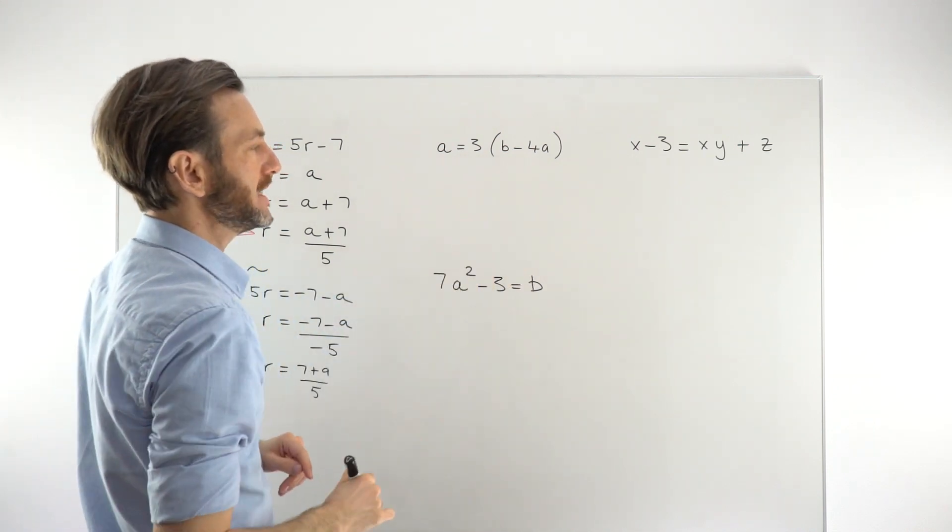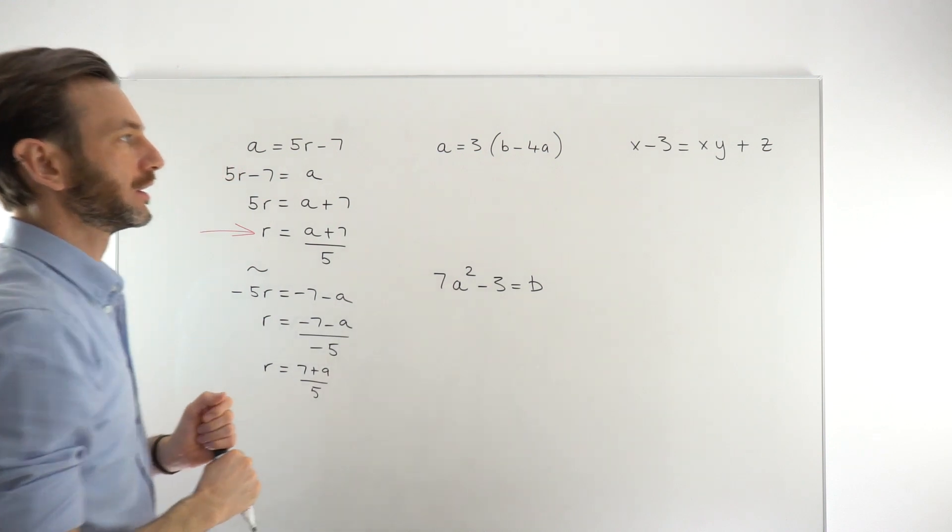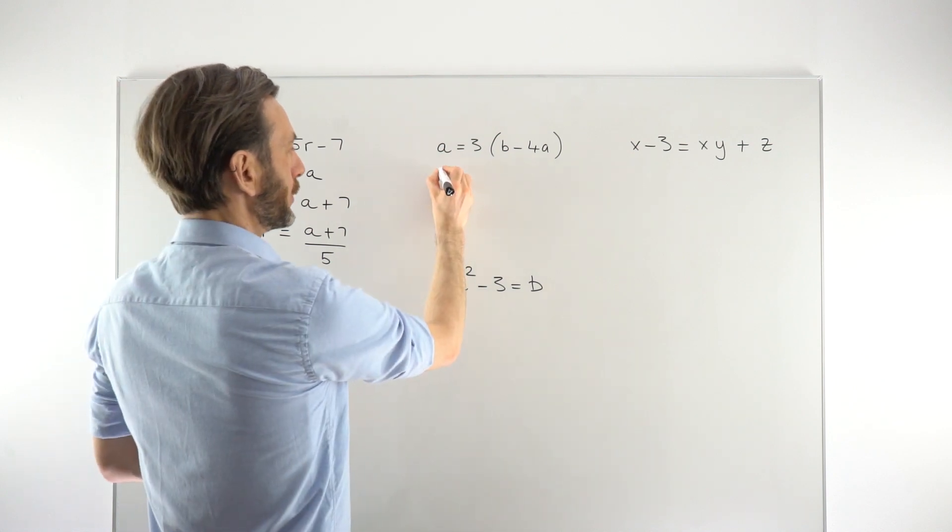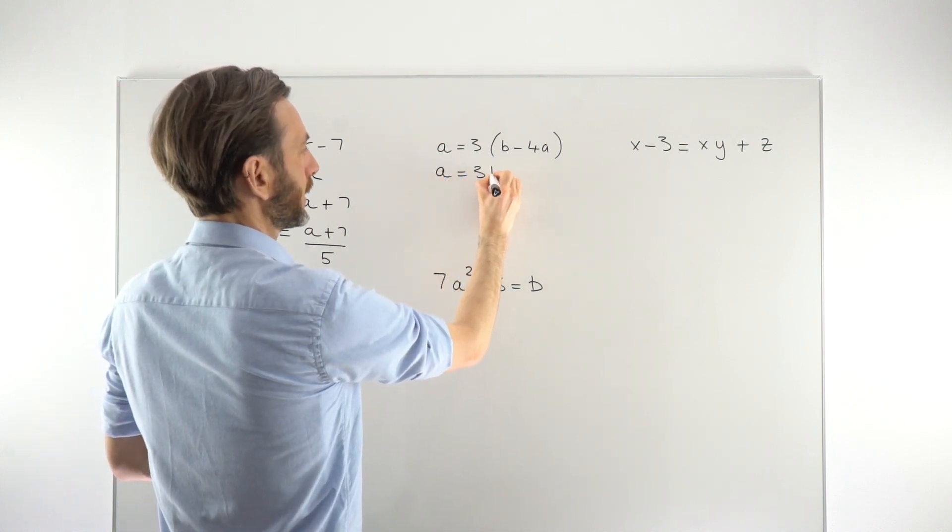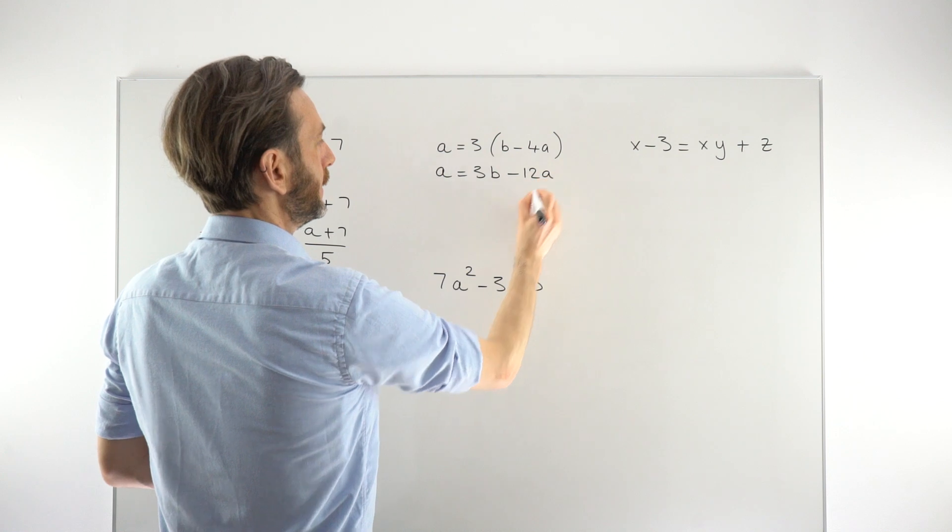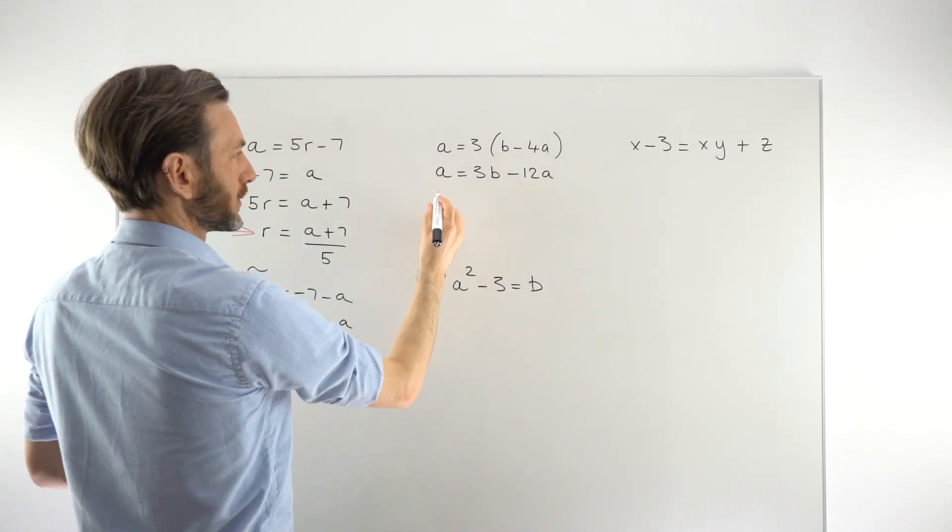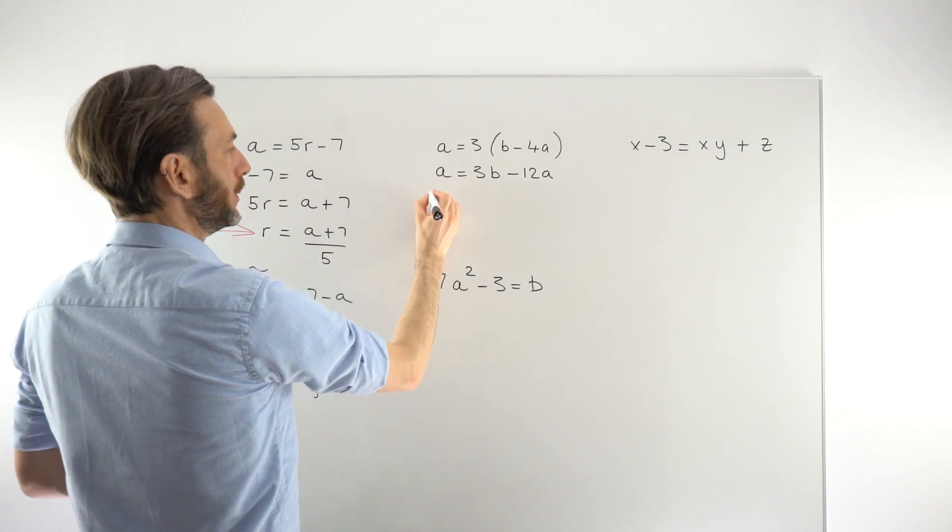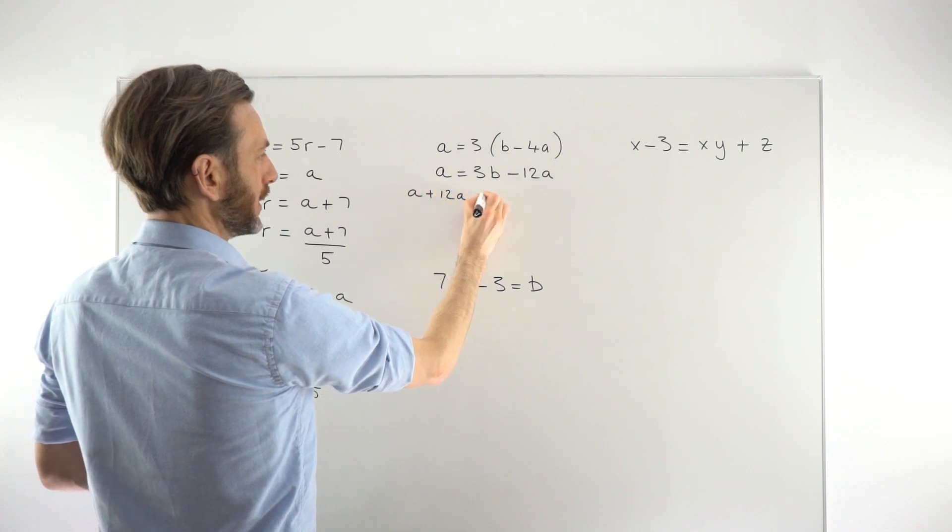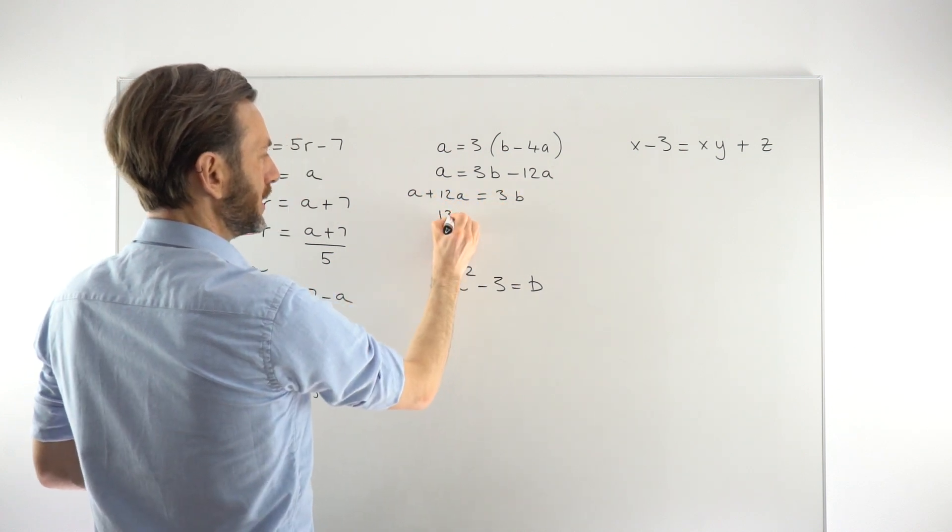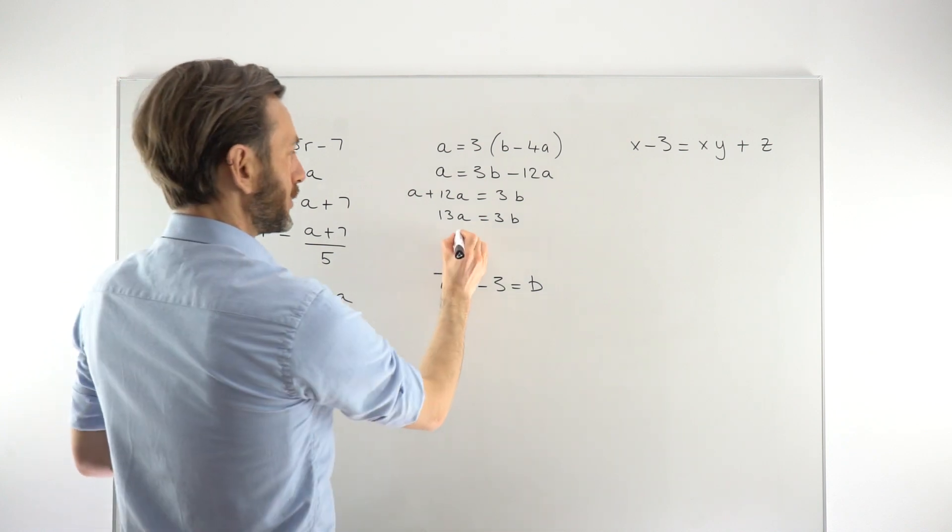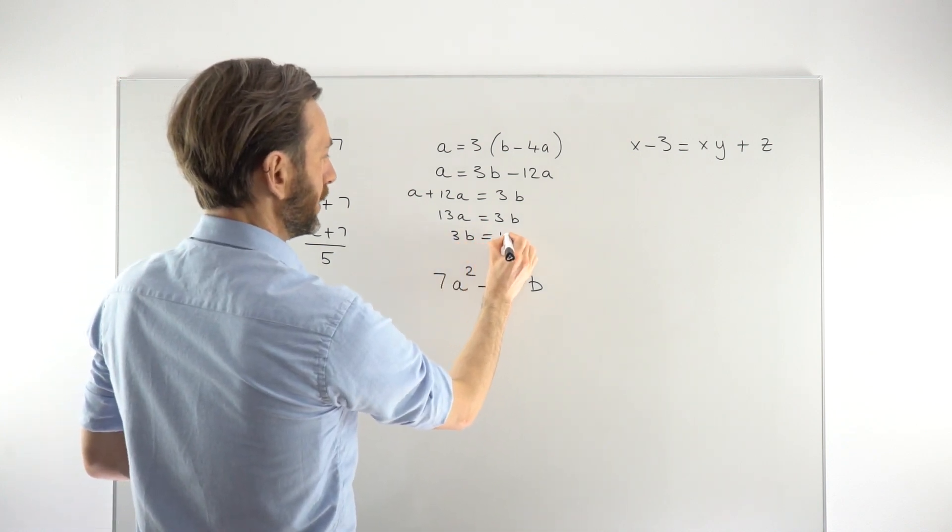This one we're going to change the subject to B. So at the moment the B is kind of locked up there inside the bracket, so we need to expand the bracket to get the B out of the bracket. So just starting off by expanding the bracket, so we get 3B minus 3 times minus 4A, which will be 12A. I'm going to take the A term over to this side. So it's a minus 12, it will become a plus 12 on the other side, combining that with this one. So it'll be A plus 12A equals 3B. So you get 13A equals 3B.